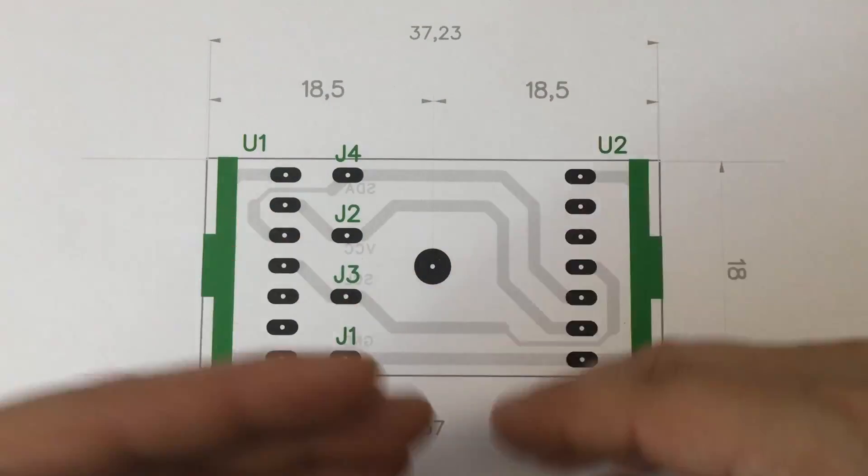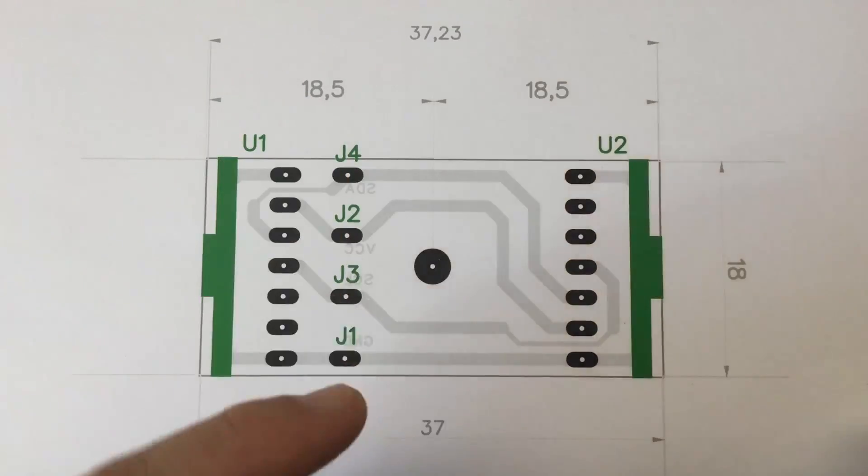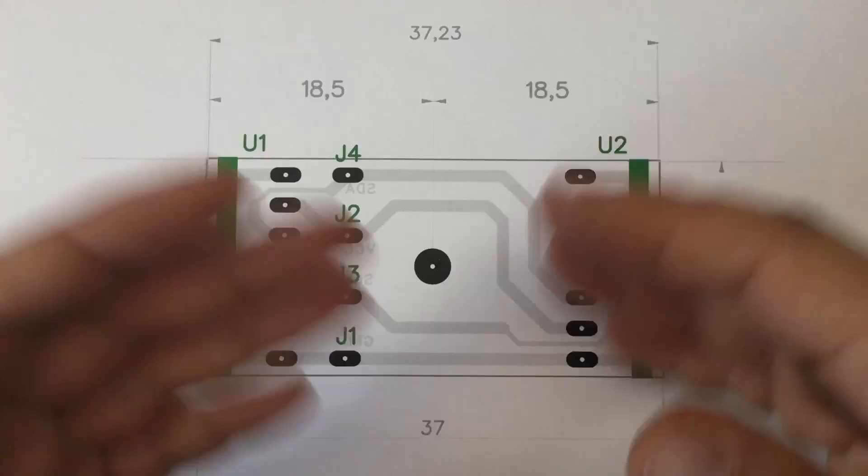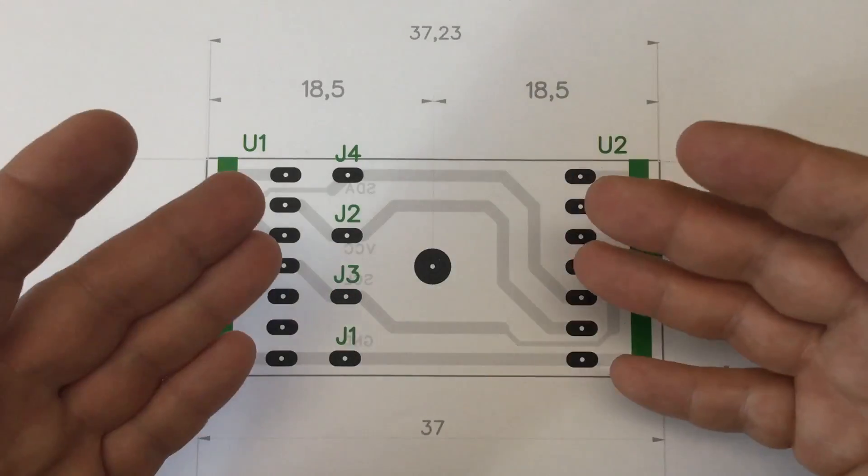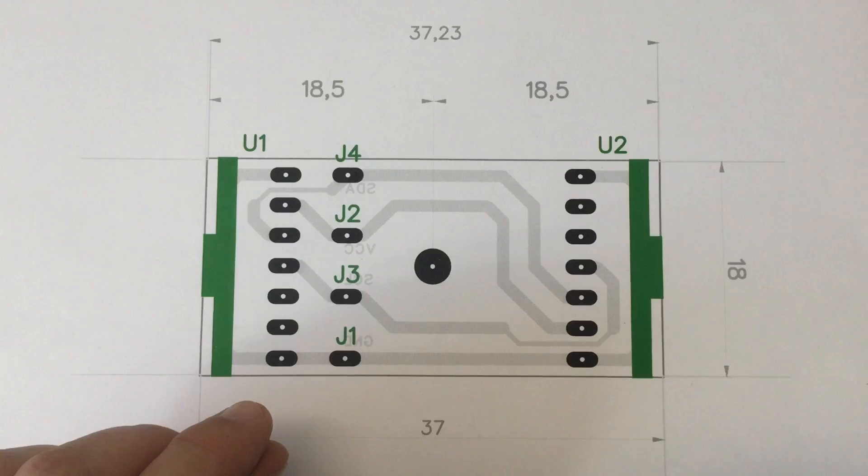I already talked about the layout of our carrier board or motherboard in detail in part four. Link in the description. Since you saw me making PCBs a whole lot of times before, I just went ahead and made the PCB.